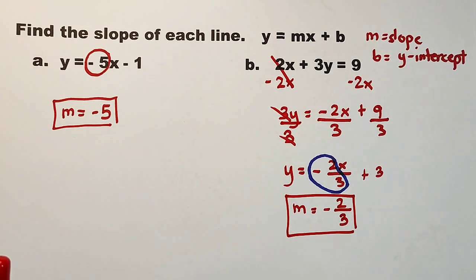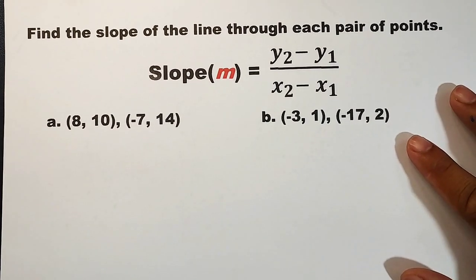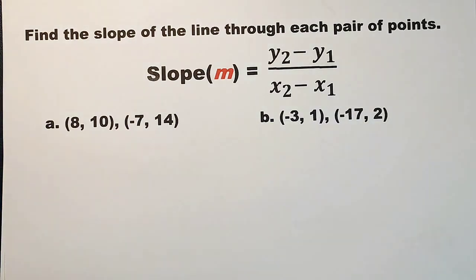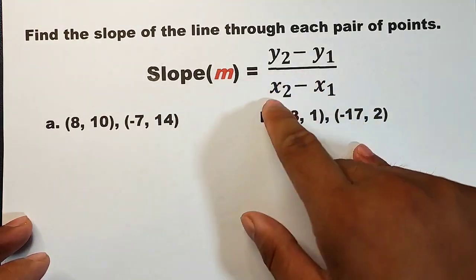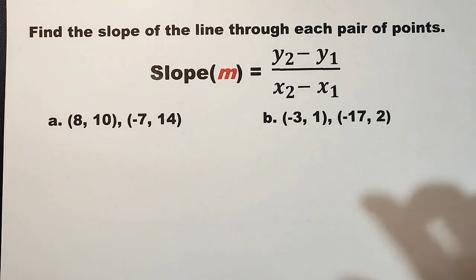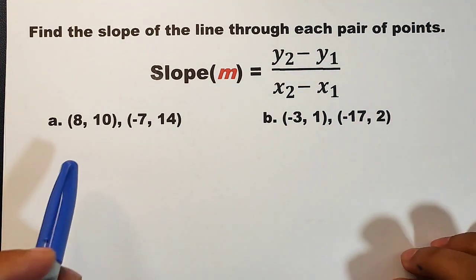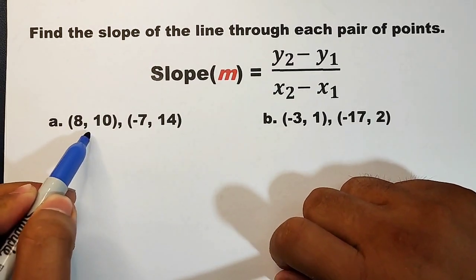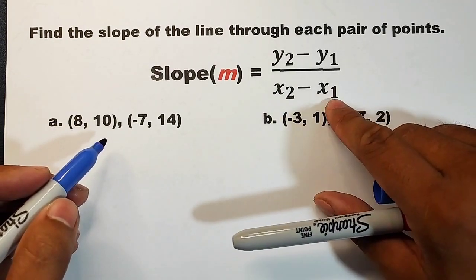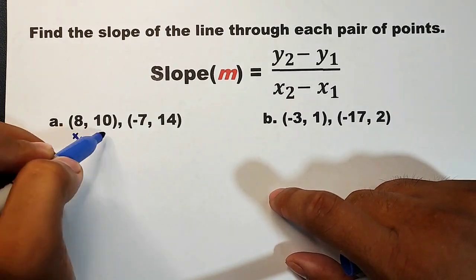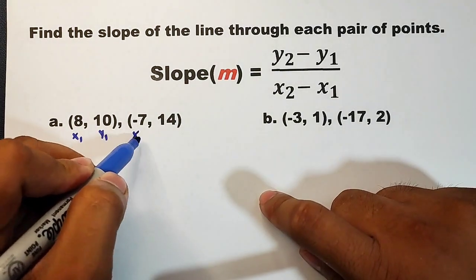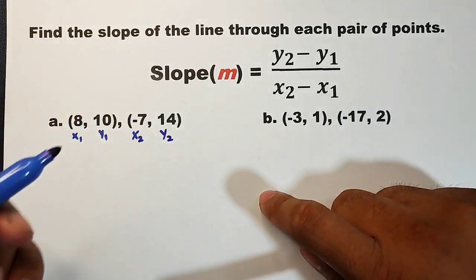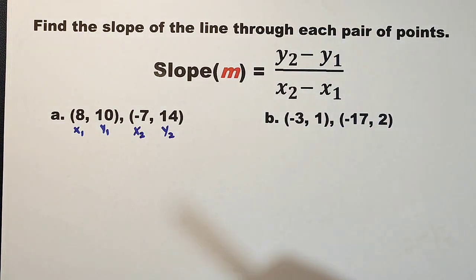For the last method, given the coordinates of two points, we use the formula: m equals y-sub-2 minus y-sub-1 over x-sub-2 minus x-sub-1. Label each coordinate: the first ordered pair (8, 10) gives x-sub-1 equals 8 and y-sub-1 equals 10. The second ordered pair (negative 7, 14) gives x-sub-2 equals negative 7 and y-sub-2 equals 14. Now substitute into the formula.